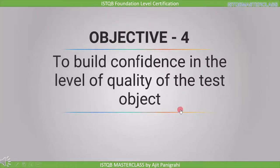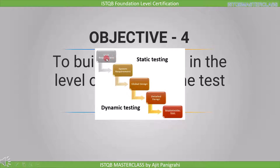The fourth objective is to build confidence in the level of quality of the test object. For example, in the requirement stage the requirement is our test object. If we clarify all our requirements in the requirement stage itself, then we can build confidence in our requirement and finally in our product.